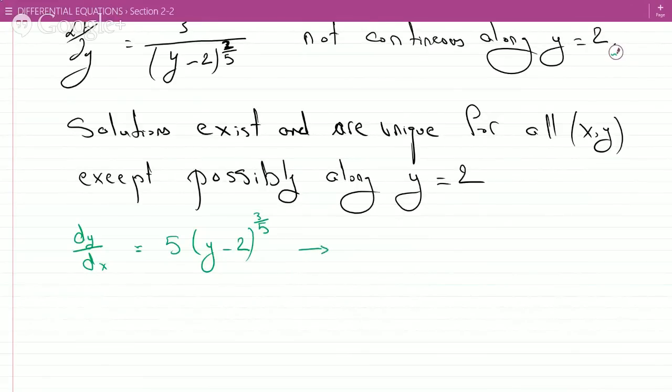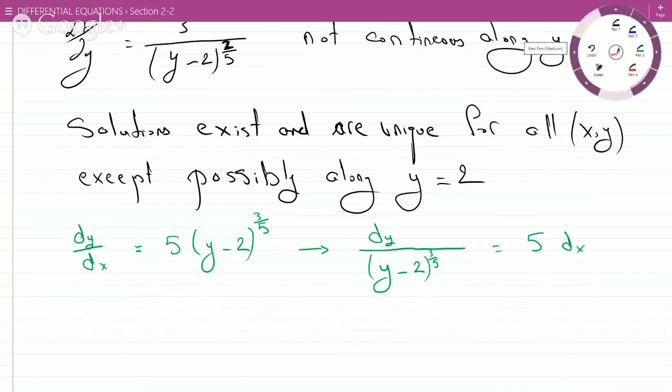So this becomes dy/(y-2)^(3/5) equals 5 dx by separation of variables, and now we can integrate both sides.